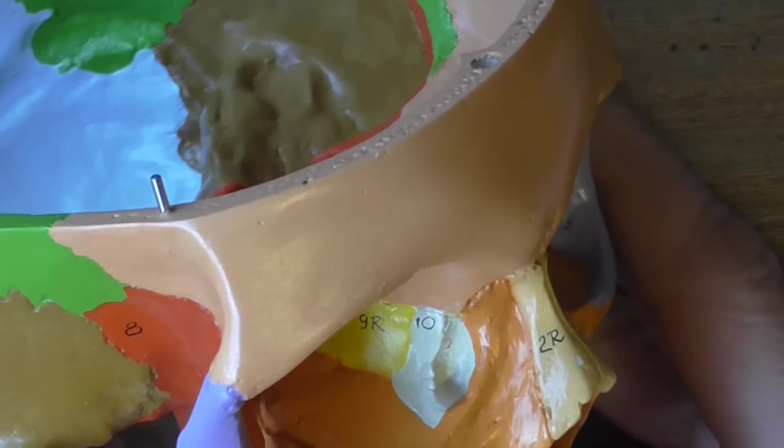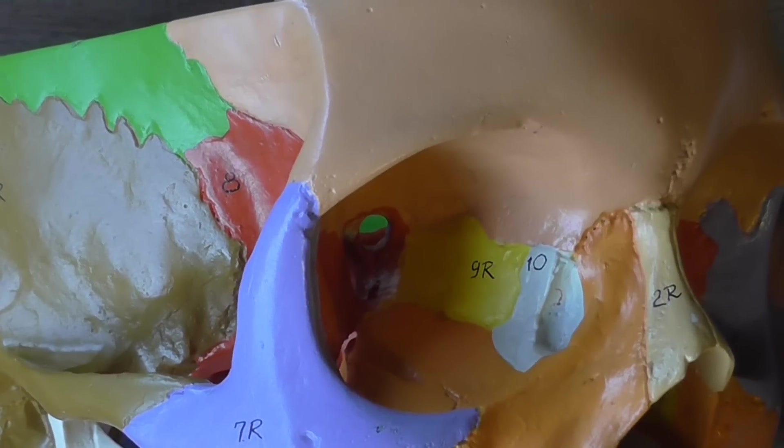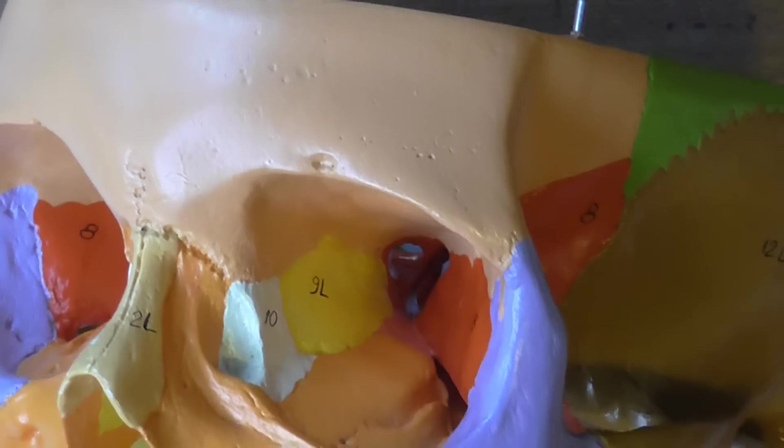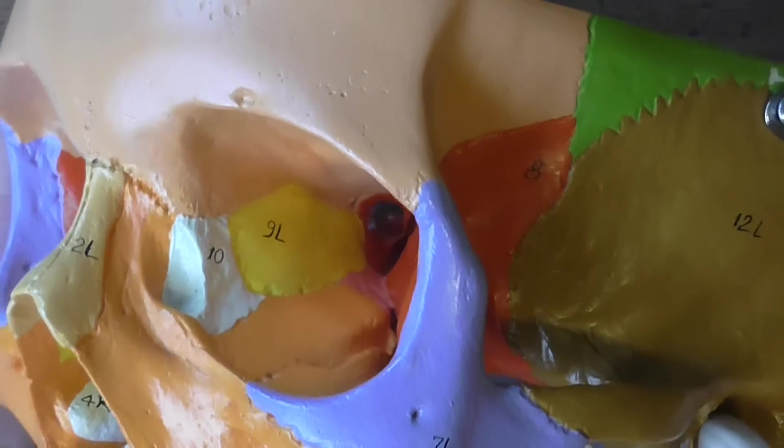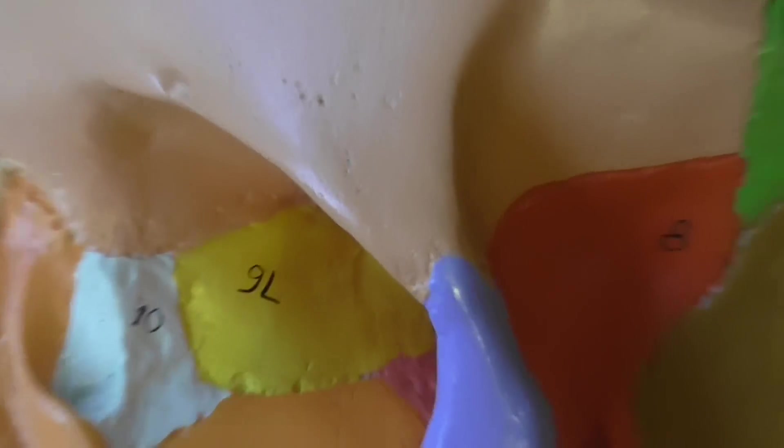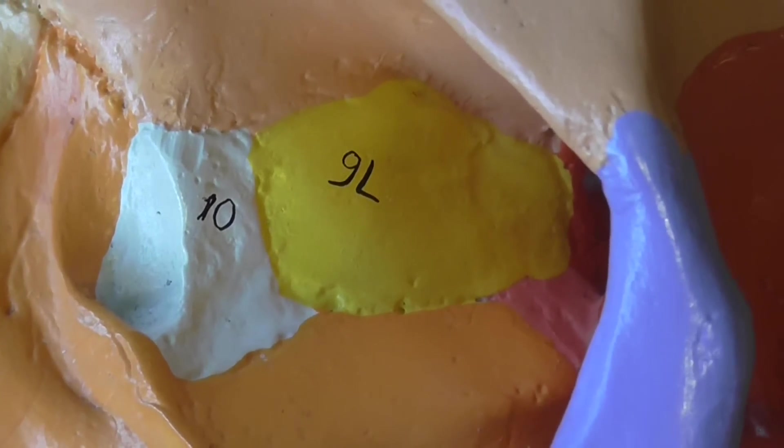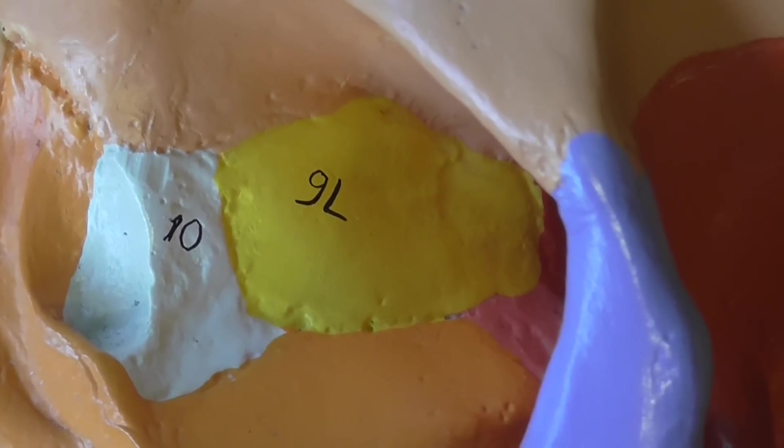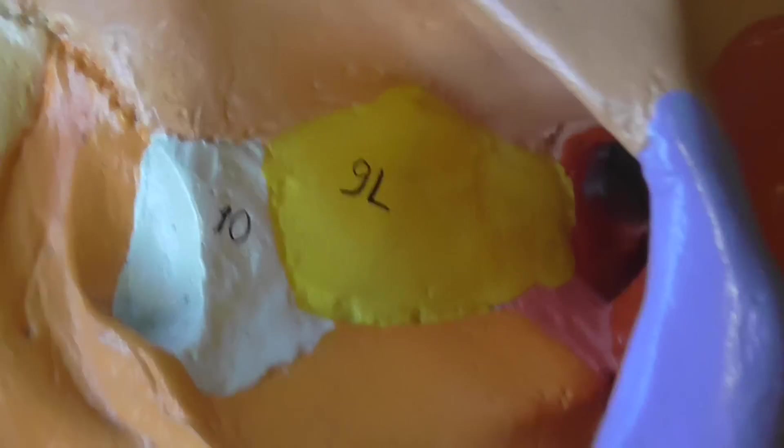You can see the sphenoid on the outside still in red here. We see it inside the orbit there. Then the ethmoid bone is in yellow which we see in here labeled 9r on this model. The same on that side. The ethmoid bone in yellow. And the lacrimal bone is labeled 10 on this model. It's a cream color. There we see the yellow ethmoid bone and the creamy white colored lacrimal bone inside the orbit.